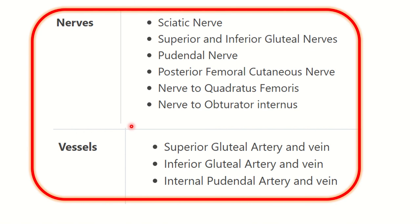This box is very important for exam preparation. The nerves passing through the greater sciatic foramen are: sciatic nerve, superior and inferior gluteal nerve, pudendal nerve, posterior femoral cutaneous nerve, nerve to quadratus femoris, and nerve to obturator internus.